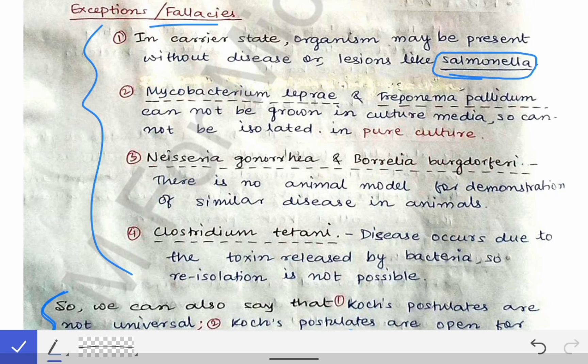The second fallacy relates to isolation in pure culture. In the case of Mycobacterium leprae and Treponema pallidum, we are not able to isolate the organism in pure culture — this is in contrast to the second criteria.